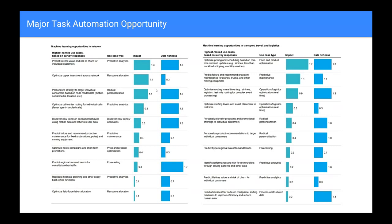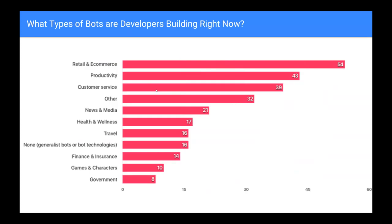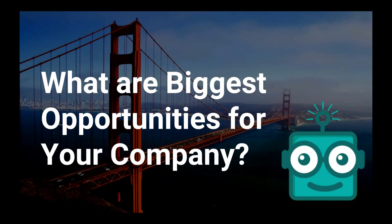Bot developers, when asked what they're building, show a fairly even split between bots for businesses, consumers, or both. The biggest areas they're building for right now are retail and e-commerce, productivity, and customer service — which overlaps with the previous automation data. The most important question for your company is: what are the biggest opportunities? If you're not thinking about this, someone else is — and if your company doesn't disrupt itself, someone else will.